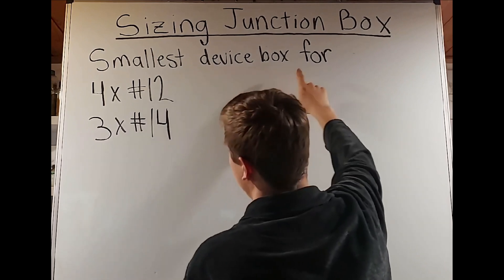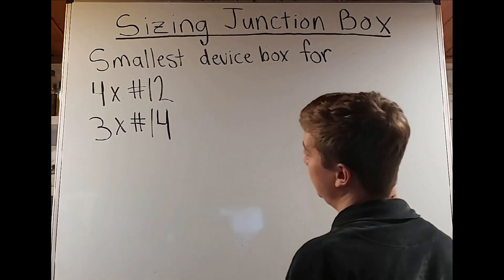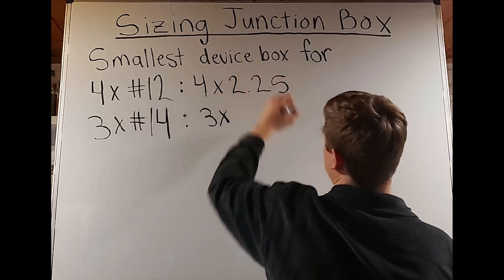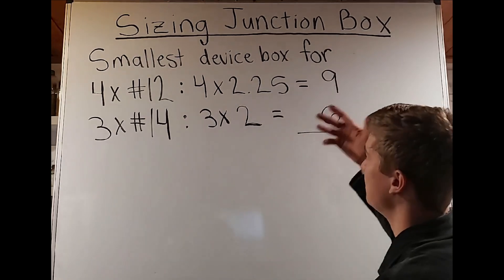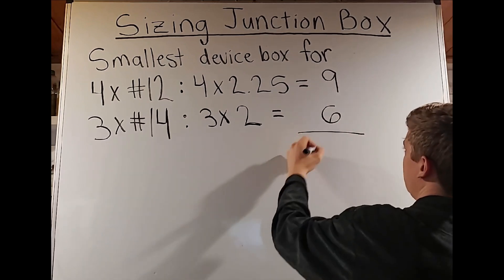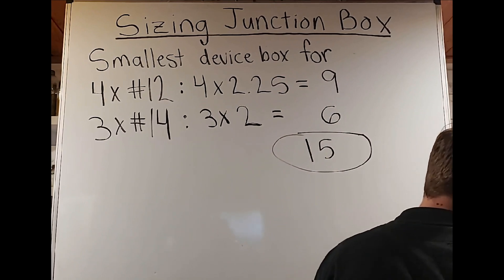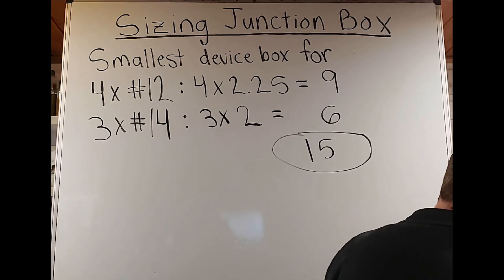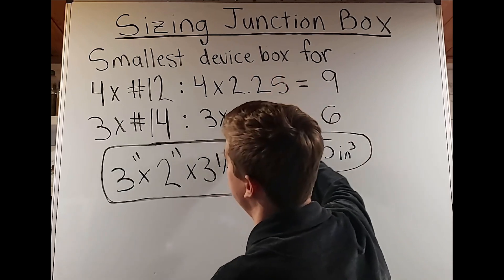Next: what is the smallest device box for four number-12 and three number-14 gauge conductors? First, we calculate the total cubic inches: four times 2.25 equals 9, three times 2 equals 6, total is 15 cubic inches. Now in Table 314.16A under device box, starting from the top and looking for anything 15 cubic inches or above — we find 18 cubic inches for a three by two by three-and-a-half inch box. That is the smallest device box that can fit these conductors.